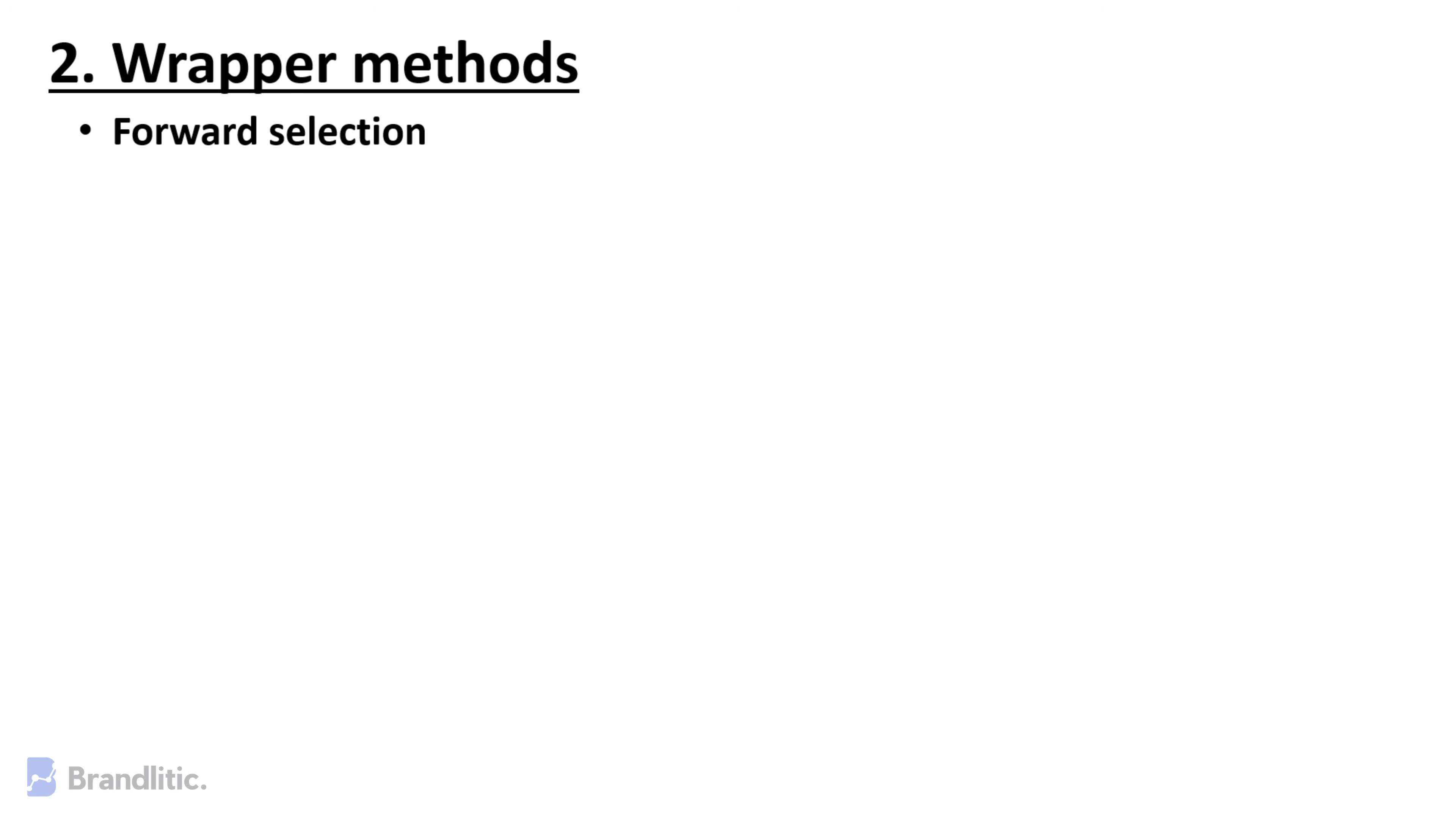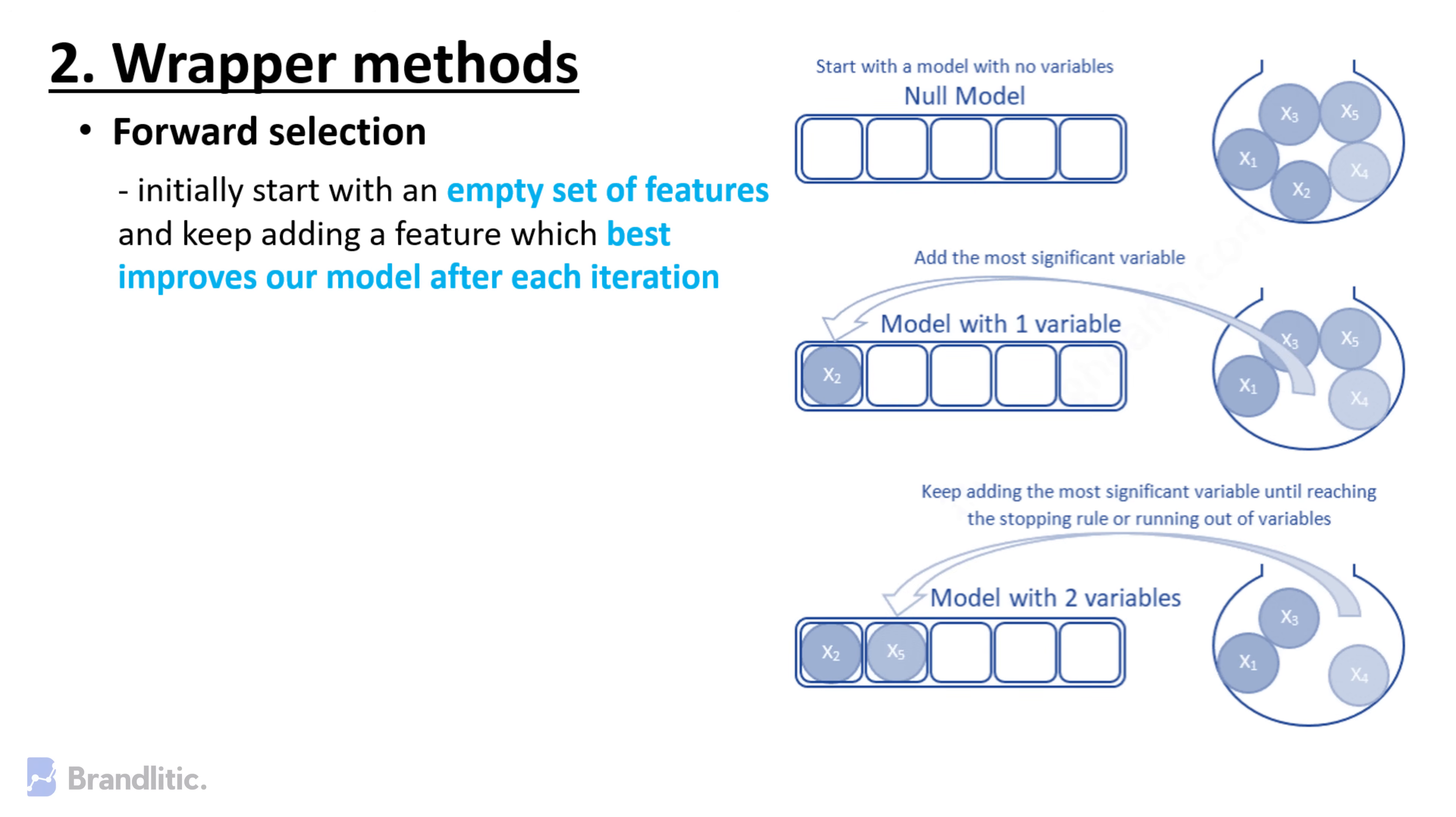Forward Selection. This method is an iterative approach where we initially start with an empty set of features and keep adding a feature which best improves a model after each iteration. The stopping criteria is when the addition of new variable does not improve the performance of the model.